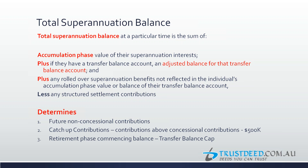Your clients may have both an SMSF and, say, an AMP fund in pension or accumulation. Total superannuation balance includes all those monies plus any rolled-over money and money in accounts outside the SMSF, including government or defined benefit plans. Accountants should ask clients about all their superannuation. Future non-concessional contributions are based on how much money you already have in super — if you already have 1.6 million in total superannuation balance, you are no longer allowed to make any non-concessional contributions.